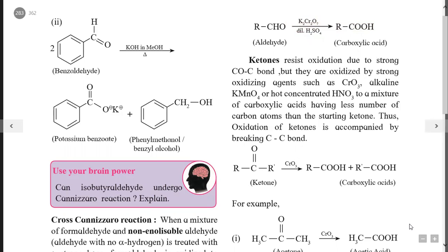The aldehyde group (–CHO) and the ketonic group (C=O) are electron-withdrawing groups. By both inductive effect and resonance effect, they deactivate the benzene ring at ortho and para positions, and therefore substitution takes place at the meta position.